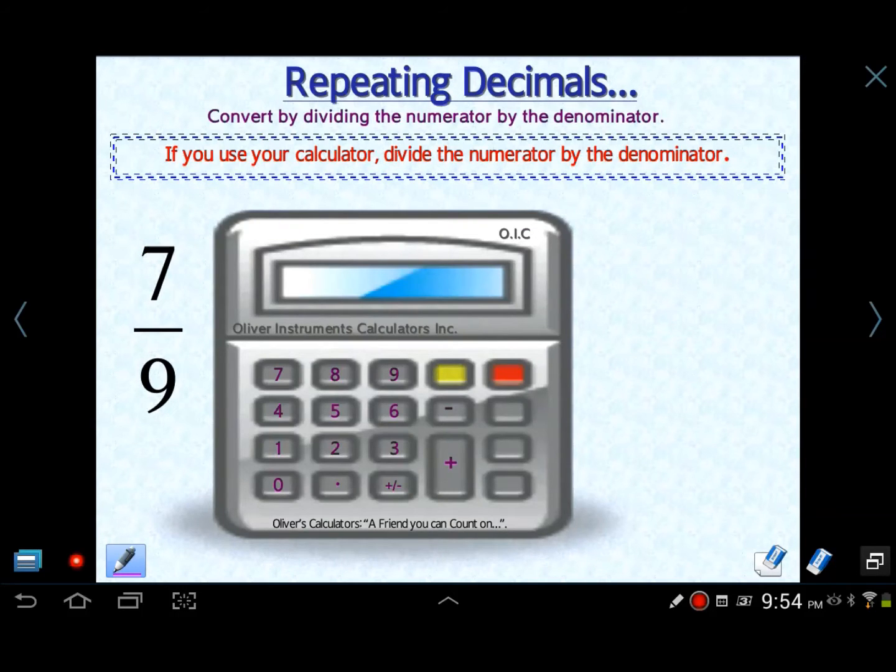Again, I'm going to encourage you to use your calculator. Now, I'm going to go over a little thing here about what you might see on your calculator screen when you're doing these kind of problems. Take 7 ninths, for instance: 7 divided by 9. You'll notice on your calculator that there's a bunch of 7s. I probably wrote way too many 7s. But there's a bunch of 7s, and at the very end you'll see an 8.